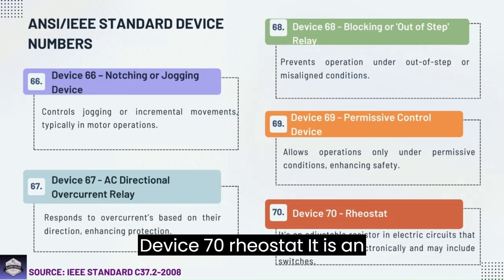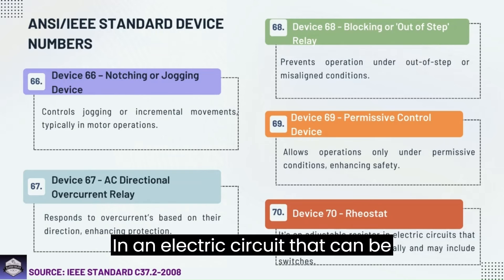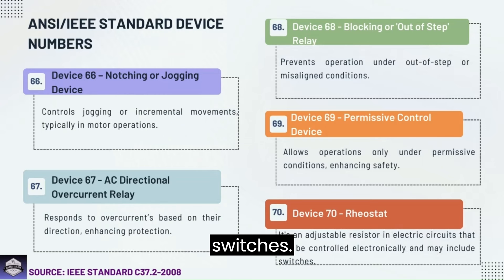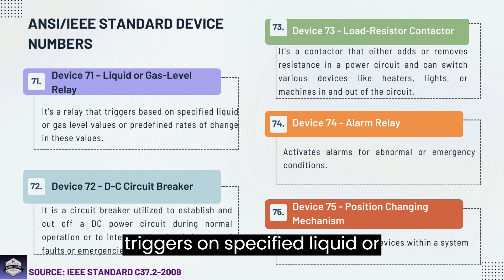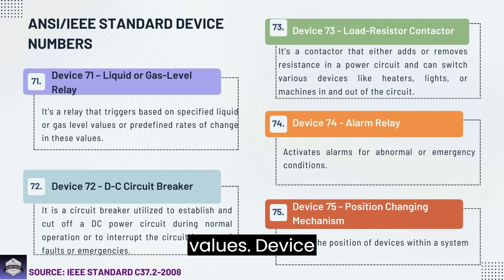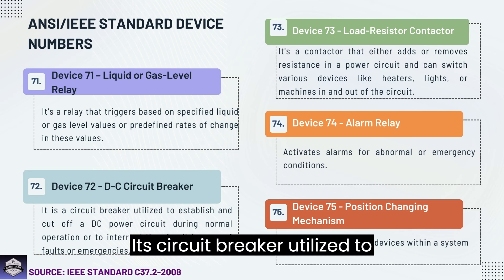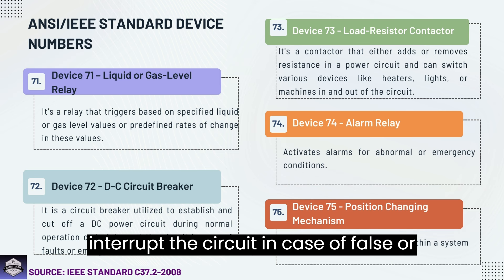Device 70: Rheostat — an adjustable resistor in an electric circuit that can be controlled electronically and may include switches. Device 71: Liquid or gas level relay — a relay that triggers on specified liquid or gas level values or predefined rates of change in these values. Device 72: DC circuit breaker — utilized to establish and cut off DC power during normal operation, or to interrupt the circuit in case of faults or emergencies.